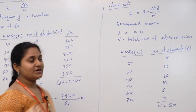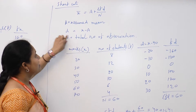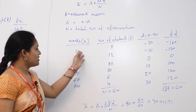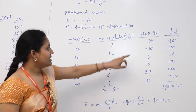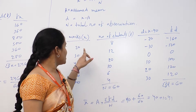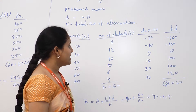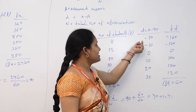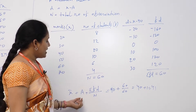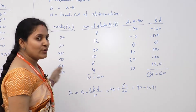Using the shortcut method, the formula is x̄ = a + Σfd / n, where a is the assumed mean, d = x − a, and n is the total number of observations. Using the same example with assumed mean a = 40: d values are 20−40 = −20, 30−40 = −10, and so on. After multiplying f and d to get fd, the summation of fd = 60 and n = 60. So x̄ = 40 + 60/60 = 40 + 1 = 41. Both methods give the same result.